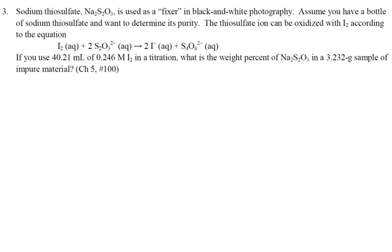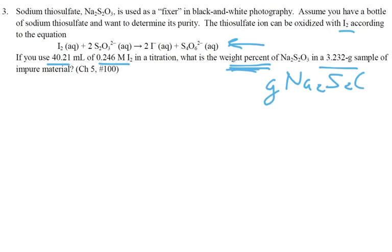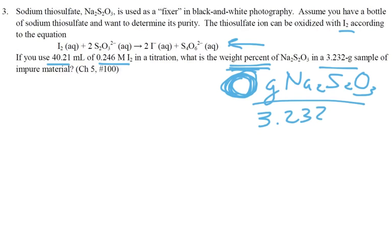Number 3. Sodium thiosulfate is used as a fixer in black-and-white photography. You want to determine its purity. The thiosulfate ion can be oxidized with iodine. If you use 40.21 milliliters of 0.241 molar iodine, what is the weight percent in a 3.232-gram sample of the impure material? Weight percent is grams of sodium thiosulfate divided by 3.232 grams of the sample, times 100%.